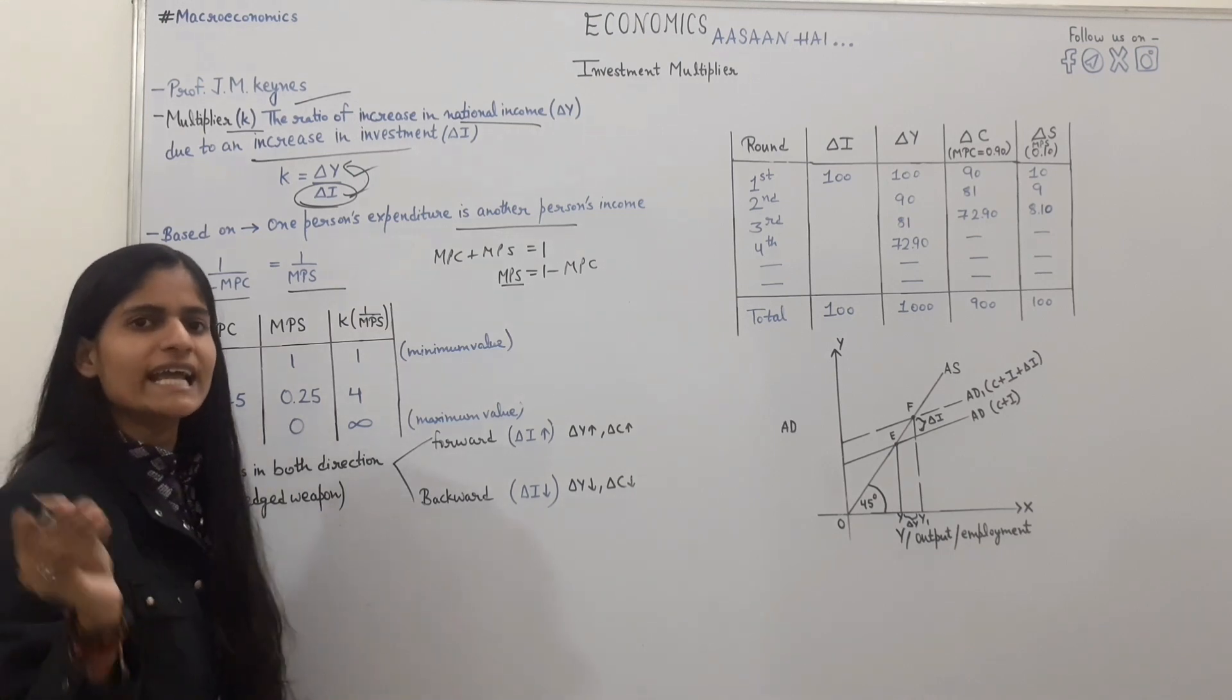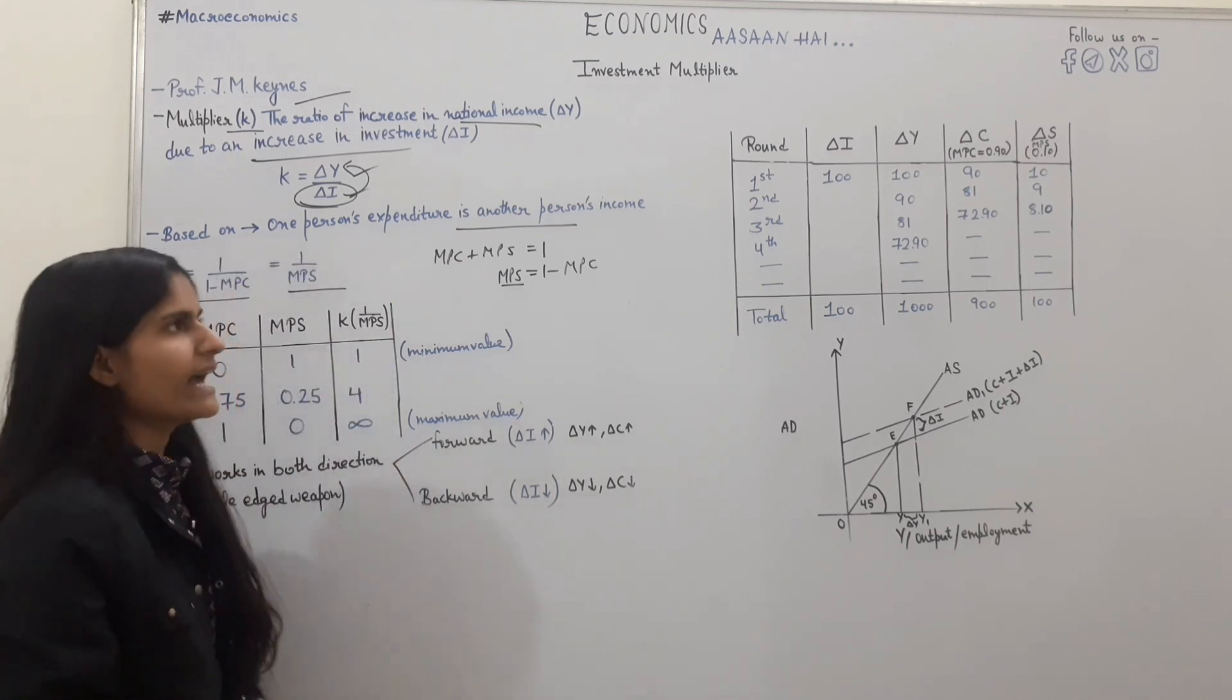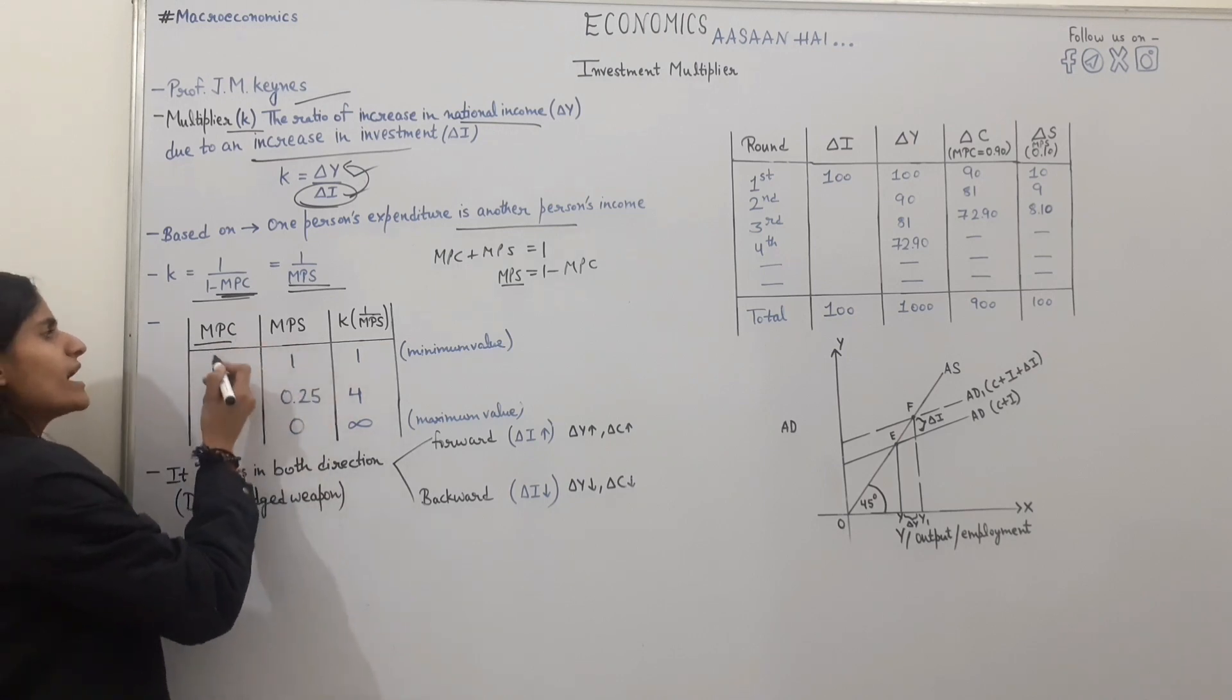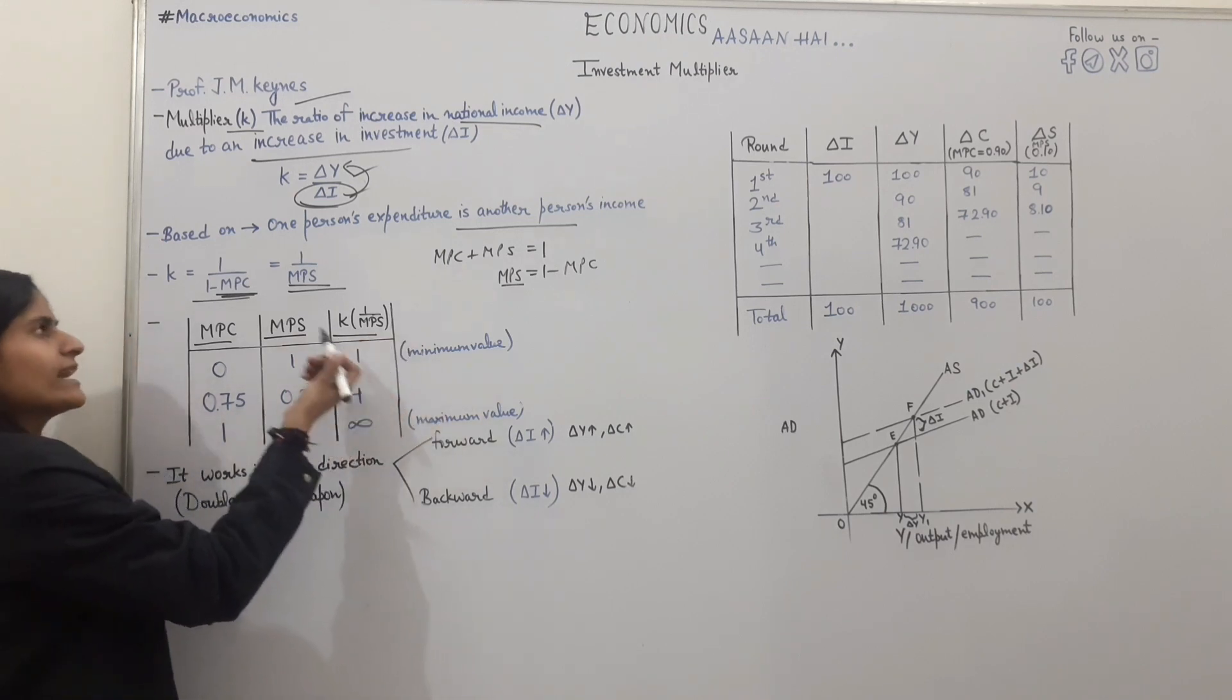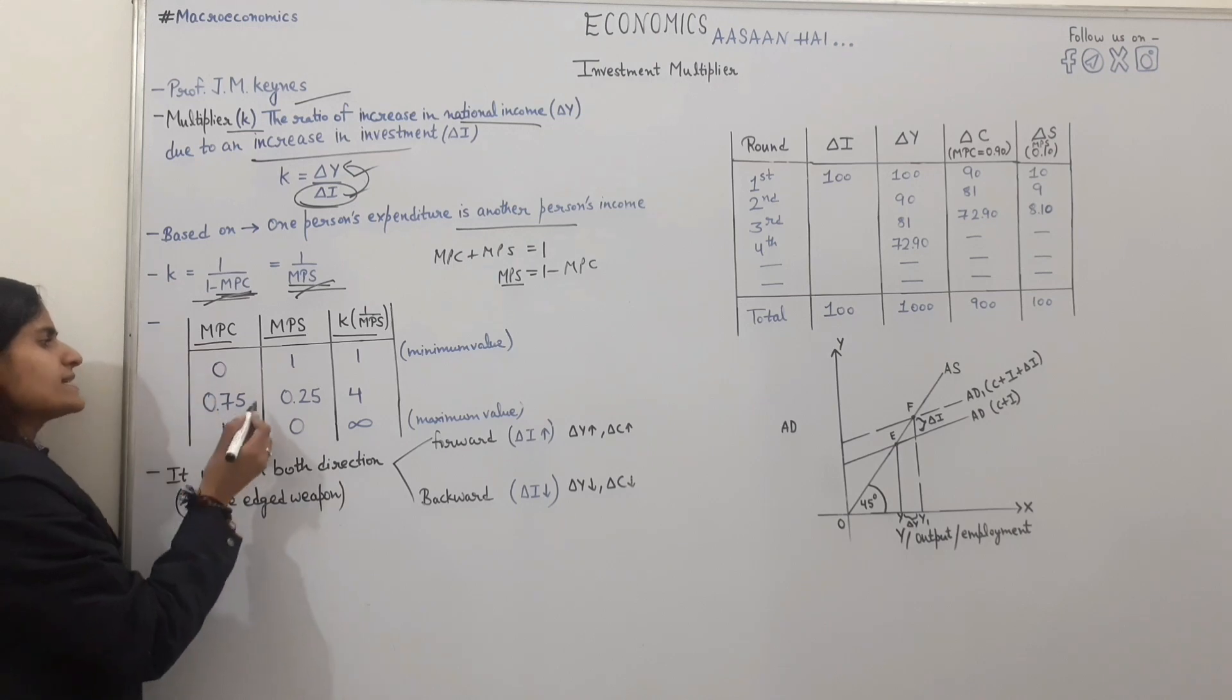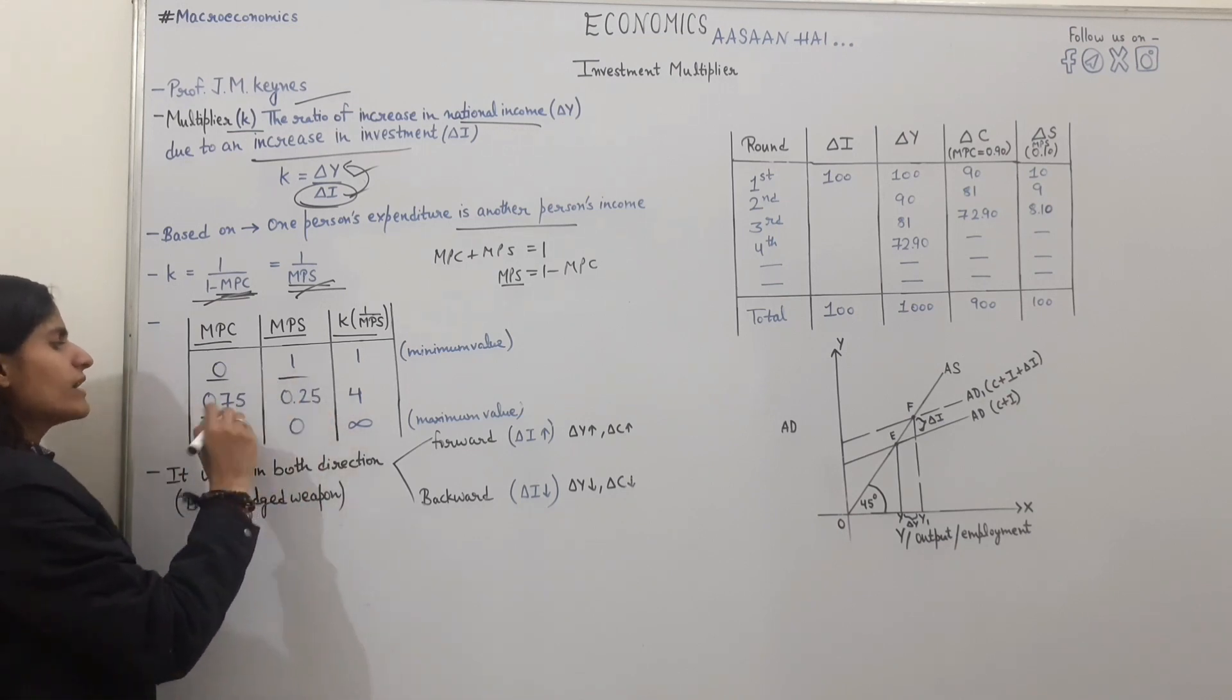So what is the relationship between K and MPC and MPS? Because K is the value of the formula, we can find that we can depend on MPC and MPS. Now, MPC is the value of 0, then 0.75, then 1. MPS is the value of 1 minus MPC. 1 minus 0 is 1. 1 minus 0.75 is 0.25. 1 minus 1 is 0.